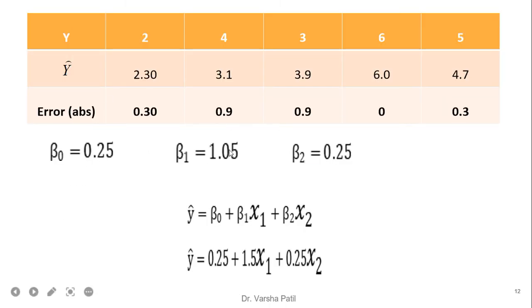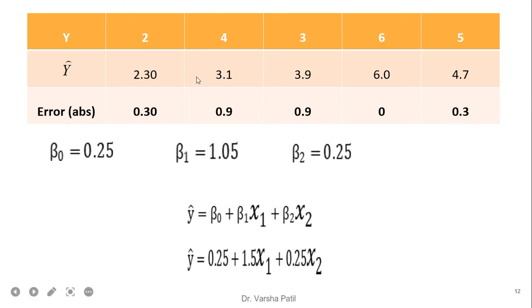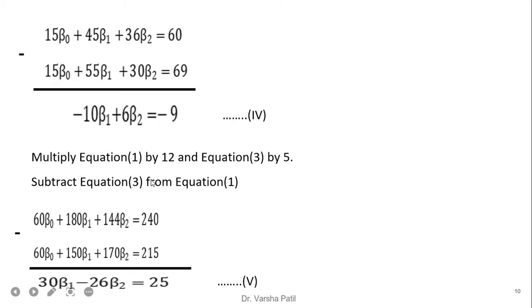Once beta 1 and beta 2 are obtained, we substitute into any equation to get beta 0 = 0.25. This is the final answer. We can also calculate the absolute errors by putting the values of beta 0, beta 1, and beta 2 along with x1 and x2 to get the predicted y. This is much easier to solve compared to the matrix method.